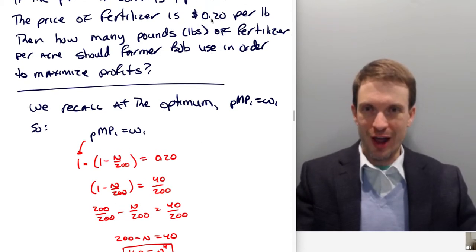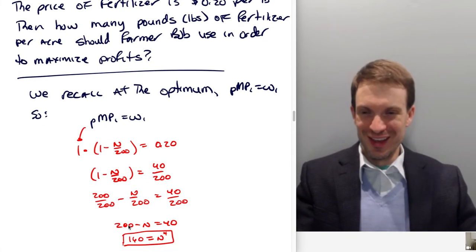Anyway, so we end up with an optimal input, or optimal use of fertilizer, of 160. All right.